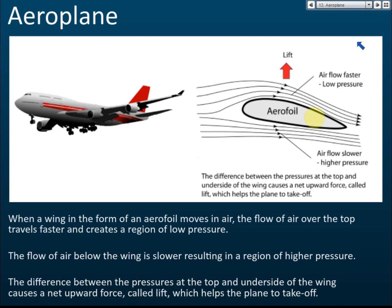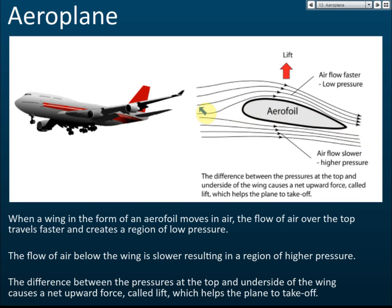One application of Bernoulli's principle is the aeroplane. The wing of the aeroplane has an aerofoil design. When the aeroplane moves forwards, some air goes above the wing and some goes below. Because the air above travels a longer distance, it moves faster and has lower pressure. The air below moves slower and has higher pressure. This higher pressure below pushes the aeroplane upwards.